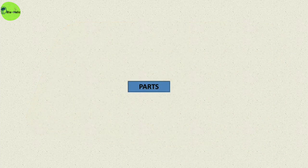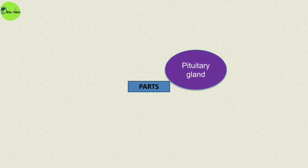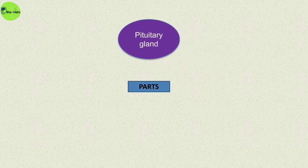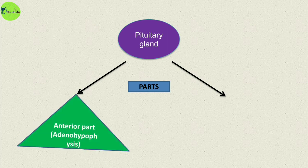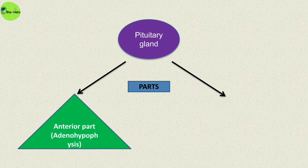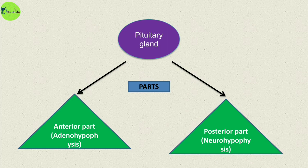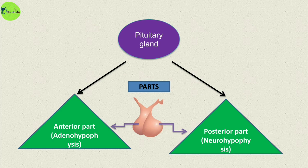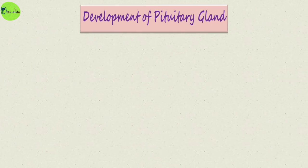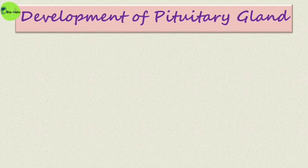Now let's have a look at the different parts of the pituitary gland. The pituitary gland mainly has two parts: the anterior part, or adenohypophysis, and the posterior part, also known as the neurohypophysis. If this is the pituitary gland, then this part is the anterior pituitary and this part is known as the posterior pituitary.